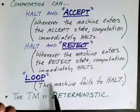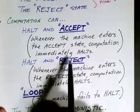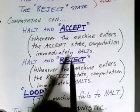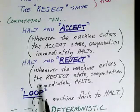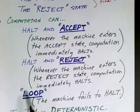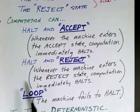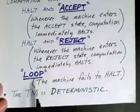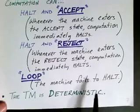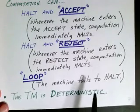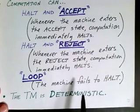The machine may also fail to halt. If it accepts, it halts; if it rejects, that's a different outcome; but it may loop, in which case we don't have an output or outcome. This is a third kind of result that our other machines didn't have. And most importantly, the Turing machine is deterministic — at every state we have exactly one transition that we can take, with no choices. It's not non-deterministic.